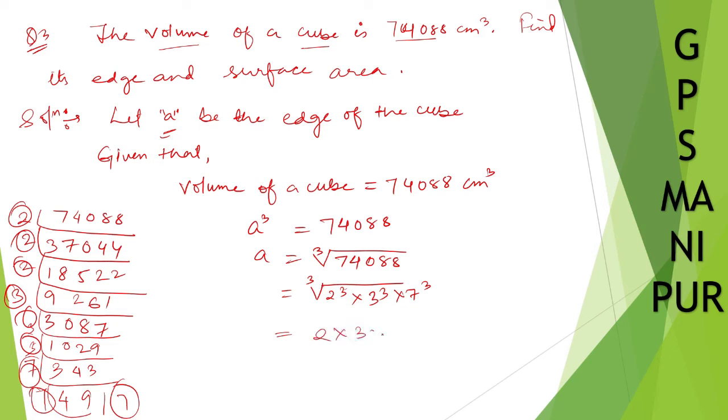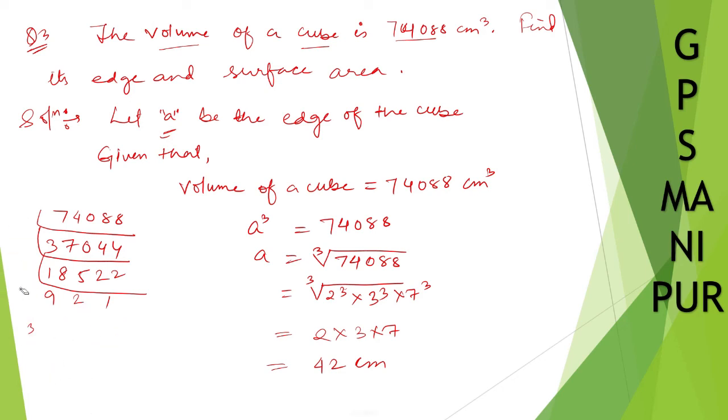There are many shortcut tricks to find cube roots. We have found the value of a. Therefore, its edge is equal to 42 cm.